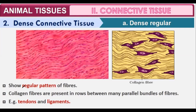It shows a regular pattern of fibers, which is why it is known as dense regular connective tissue — it is dense and regularly dense at every point equally, not irregularly dense. Examples of this tissue include tendons and ligaments.